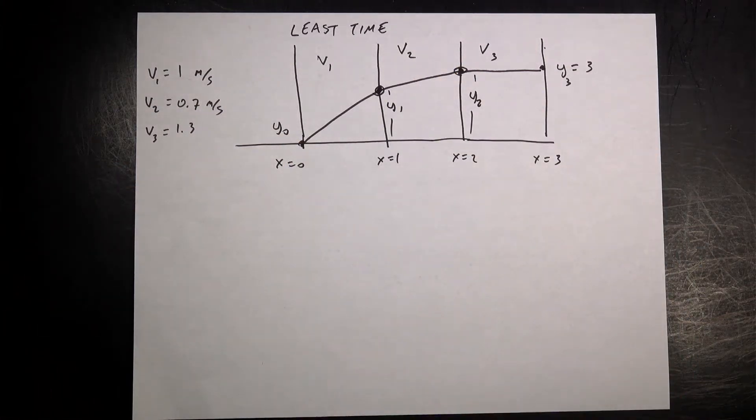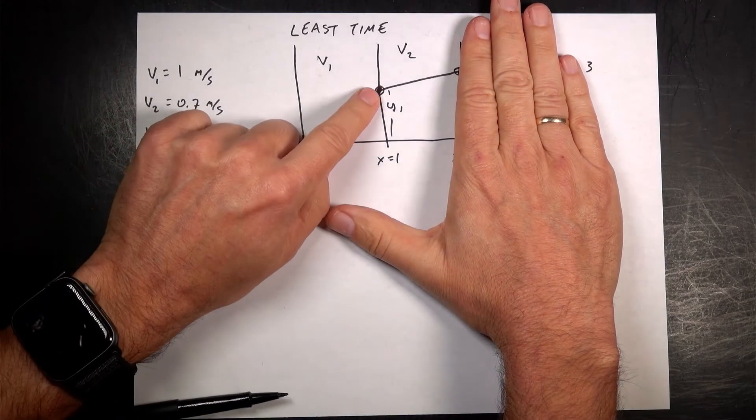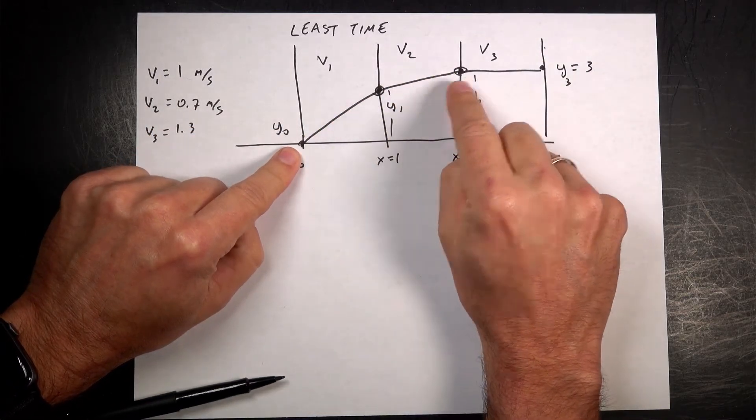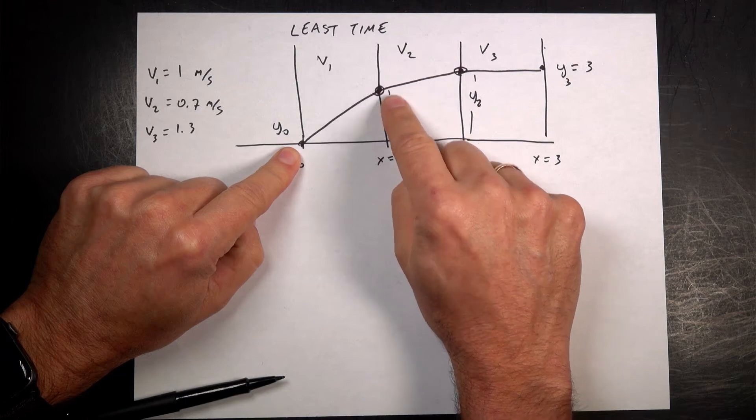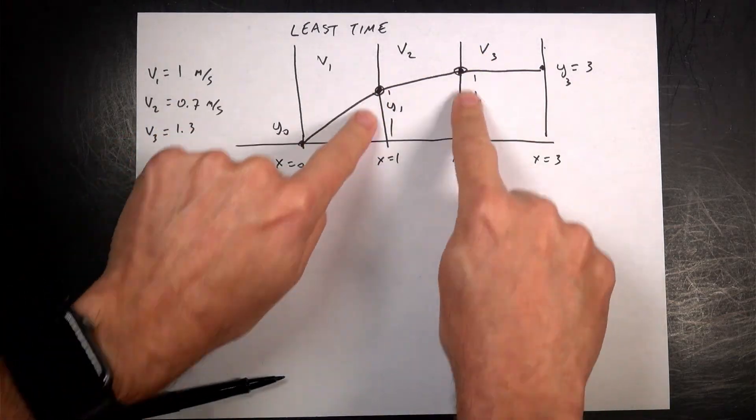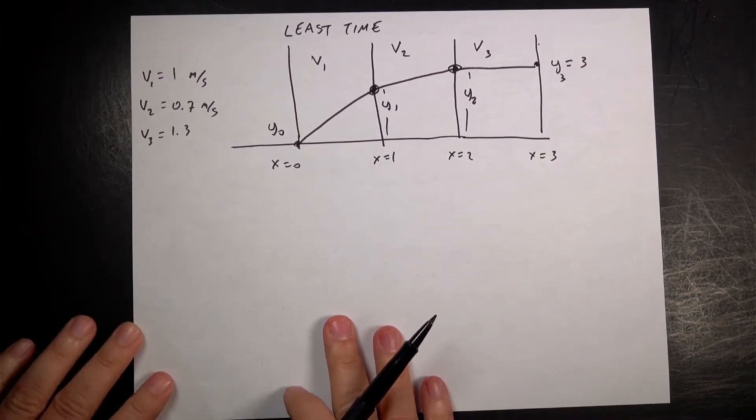So in Snell's law, if you just have two surfaces like that, then you can just do a maximum problem. So you can calculate the time it takes to go through here, the time it takes to go through there, and vary this one parameter in the middle. But now I have two parameters. I can vary both of those, right? So both of those can change. And so which one gives the optimal, the minimum time, right?